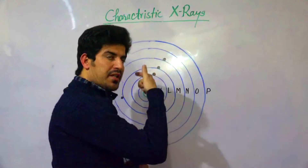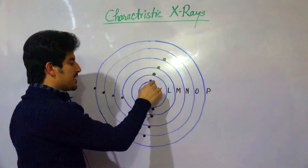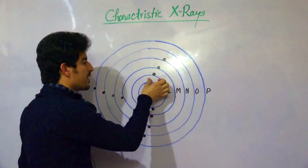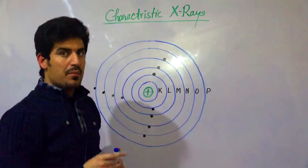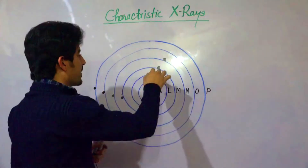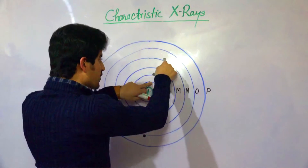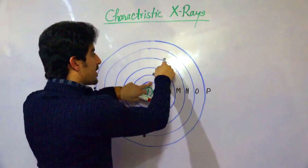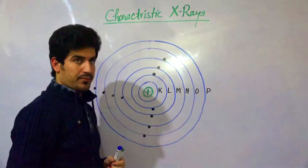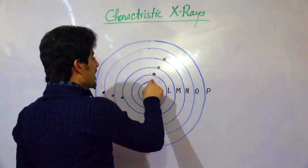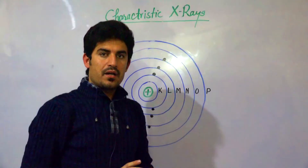We studied in the previous lecture that fast-moving electrons come out. Now, when electrons flow through the shells, we have shells which are called K, L, M, N shells. Some series is called the K-ray series.